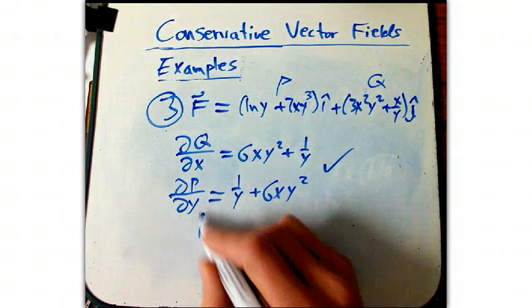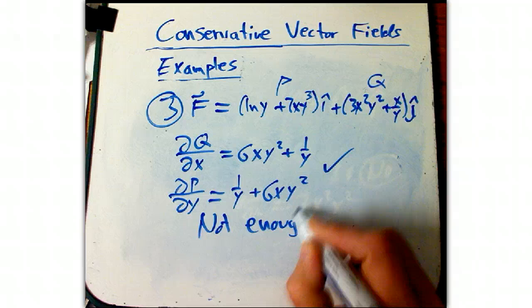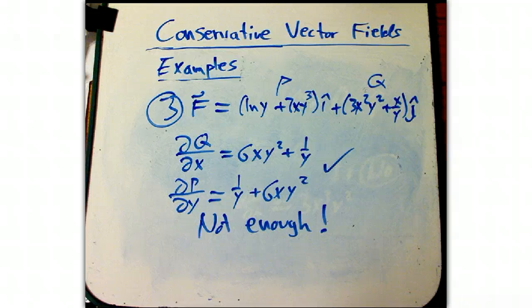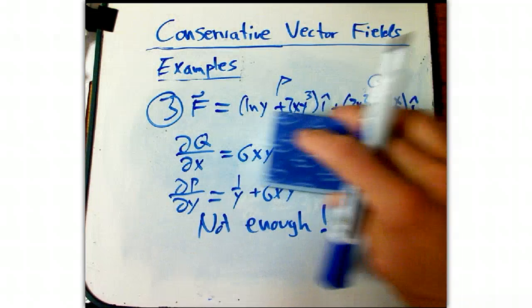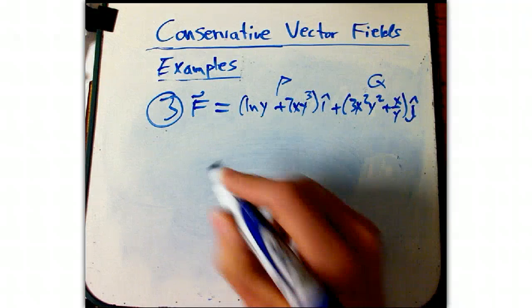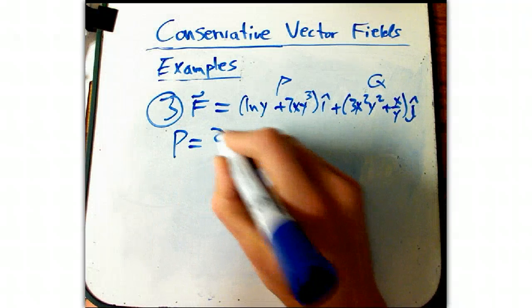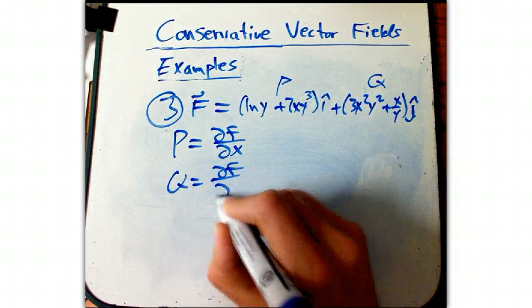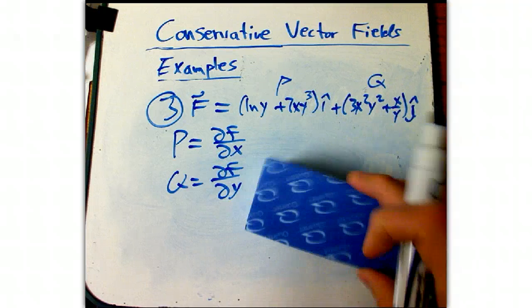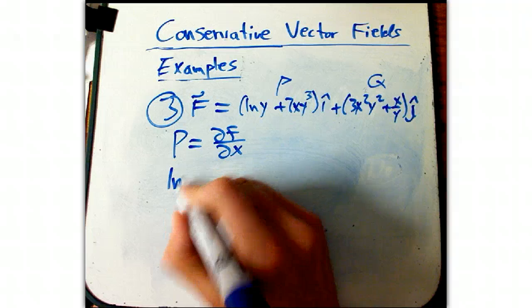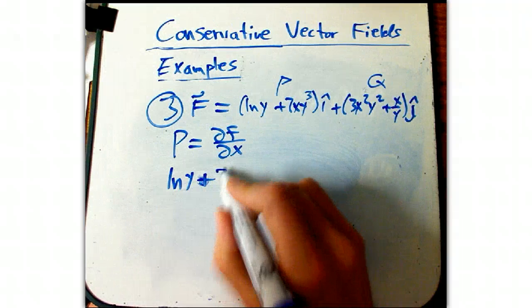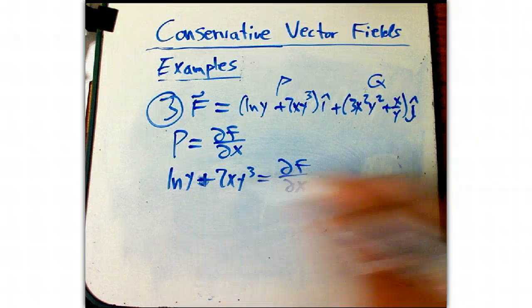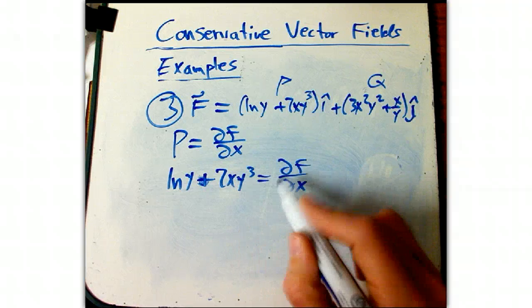Now, this does not guarantee in itself that it really is conservative. There are some real subtleties there. But at least it gives us the go-ahead to try and find a potential function. So how do you do that? That's the main thing I want to show in this video. We want p equals df/dx and q equals df/dy. We're just going to attack one at a time and see what happens. So let's do this. p equals df/dx. So I want ln y plus 2xy cubed equals df/dx. So I'm going to integrate.